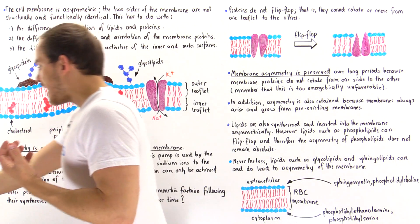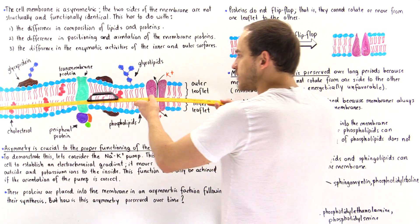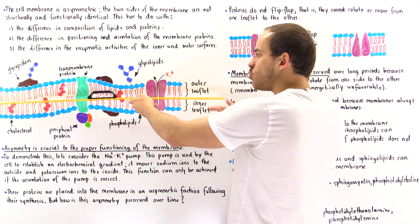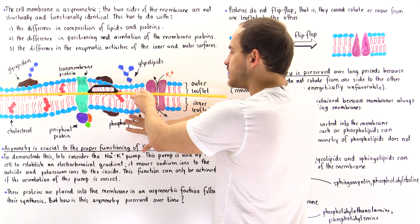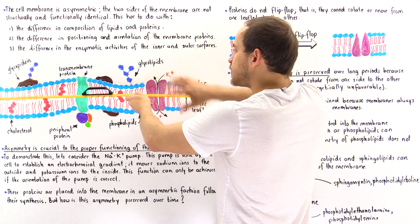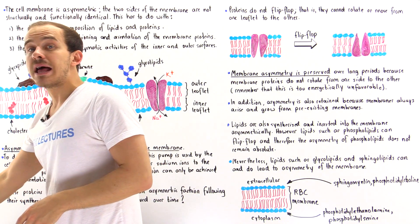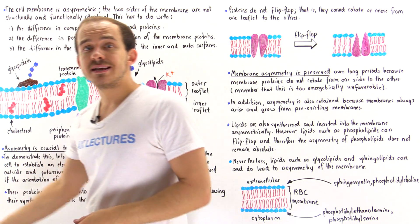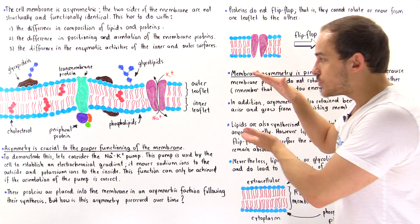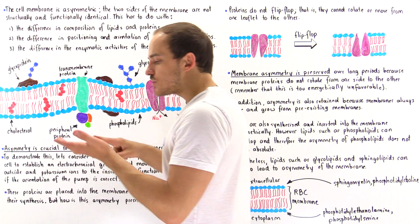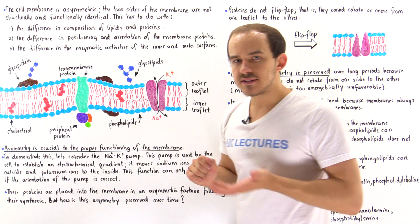Now, if we draw a line that separates the membrane in half, we'll see that this side is not the same as this side. These two leaflets are not identical, and that implies that the plasma membrane is asymmetric. So the two leaflets — the two sides of the membrane — are structurally and functionally not the same.